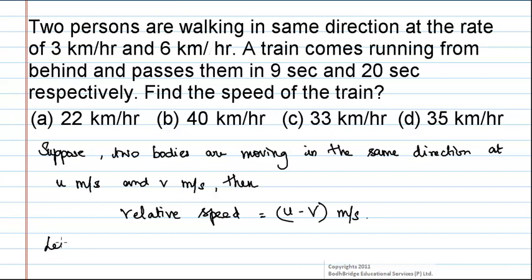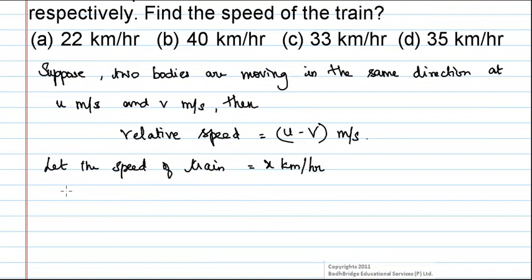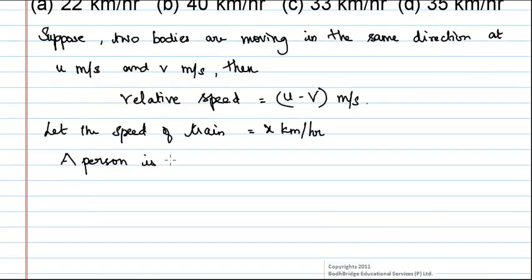Here, let the speed of the train be x km per hour. And it is given that a person is walking at the speed of 3 km per hour in the same direction.